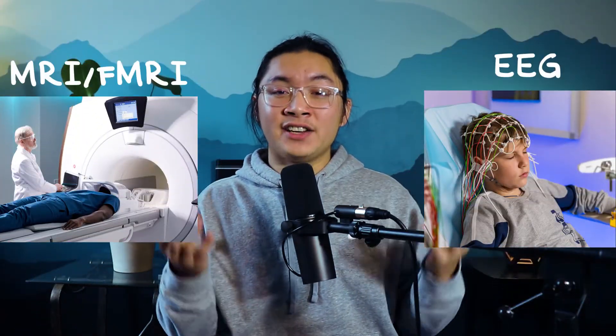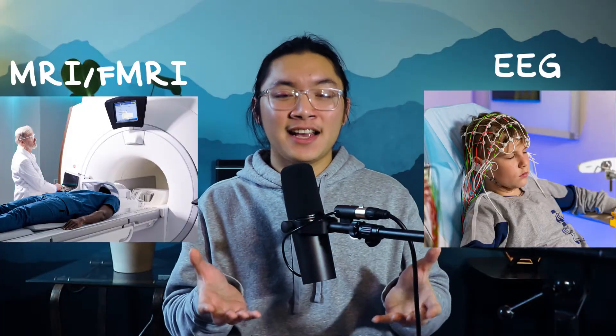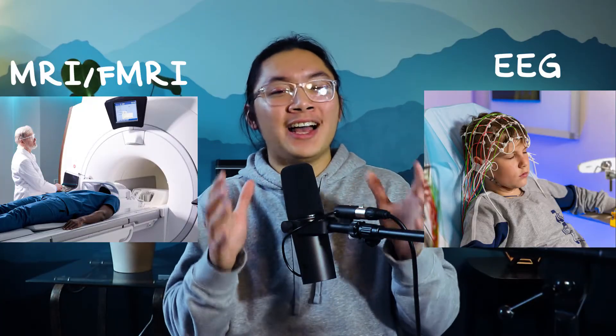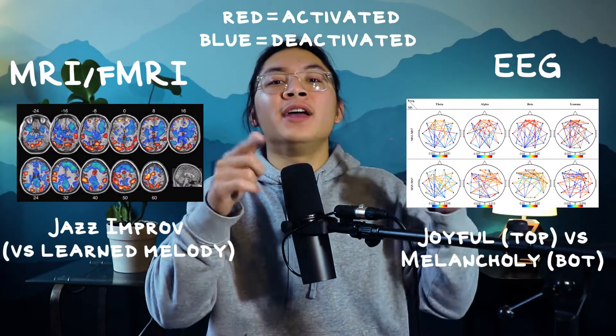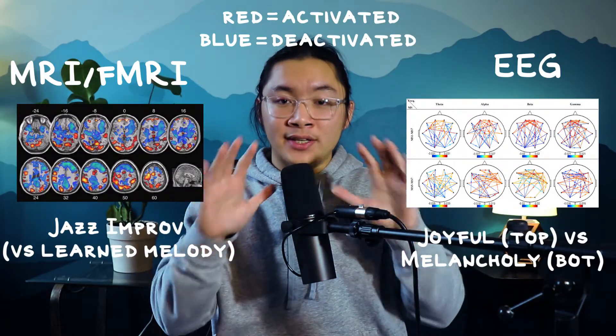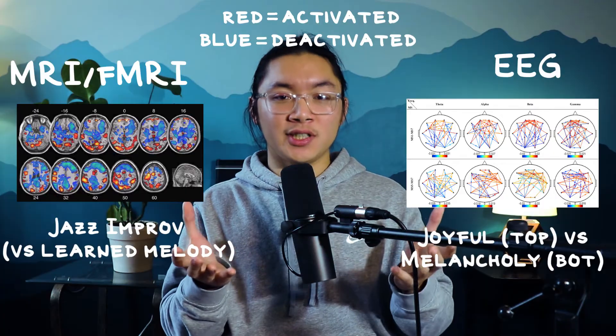How is music processed in our brains? Researchers and philosophers have been asking this question for centuries, but it wasn't until the development of modern brain imaging technology in the 1990s that researchers were able to witness in real time the effect that music has on your brain. These tools can show us the localized activation of the brain — what areas are activated and what areas are not when listening to music.